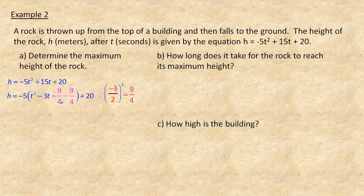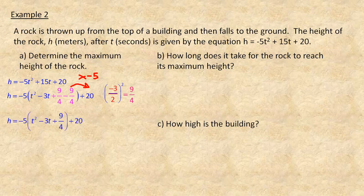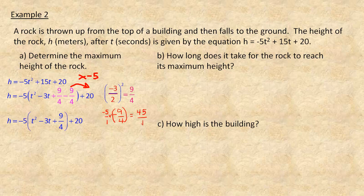9/4 is what we're going to add and subtract. We only need the +9/4 to make the perfect square trinomial. The −9/4 comes out of the brackets and gets multiplied by the negative 5. Negative 9/4 times negative 5: two negatives multiply to a positive, giving 45/4. So 45/4 is added on the end, along with the 20.